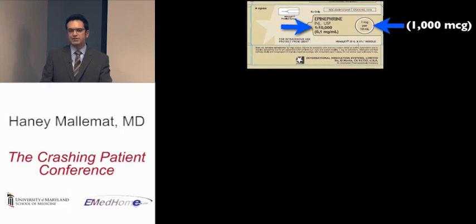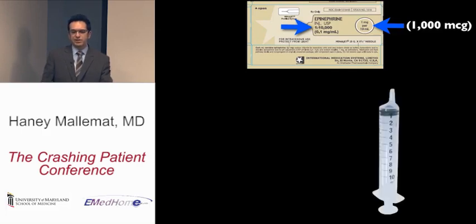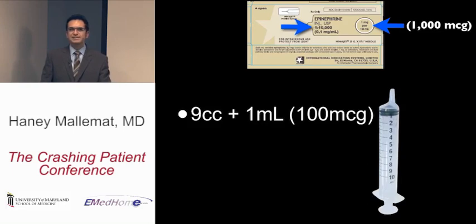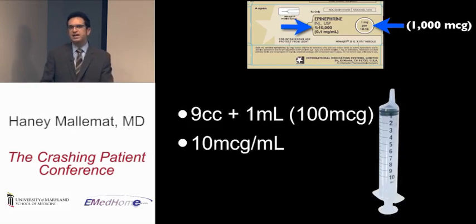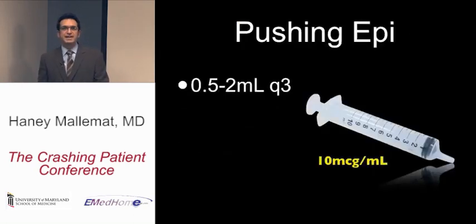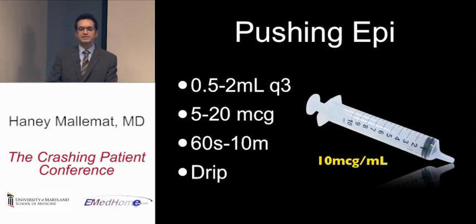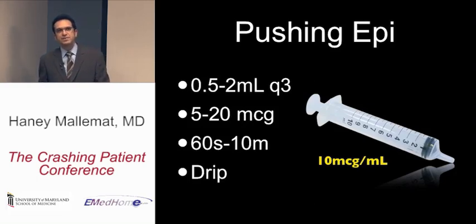For epinephrine, use the 1 in 10,000 concentration from the code cart — 1 mg per 10 mLs. Take 1 mL from that vial and put it into a 10 cc syringe, then add 9 cc's of normal saline for a total of 10 cc's, giving a 10 micrograms per mL dilution. Give half a cc to 2 cc's every 3 to 5 minutes — that's 5 to 20 micrograms per push. Effect occurs within a minute and lasts up to 10 minutes. This can also be mixed as a drip and run peripherally.